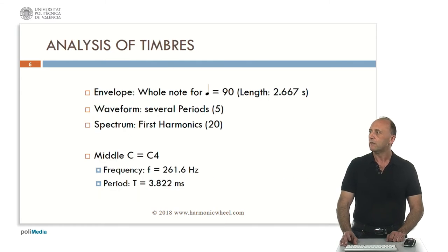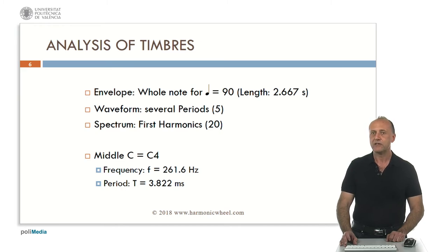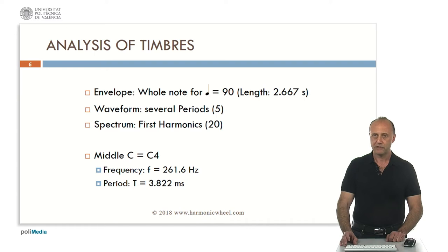To analyze the timbre, we will consider a whole note for a tempo of quarter note equal to 90. The whole note will have a length of 2.667 seconds. We will represent 5 periods of the waveform and the first harmonics — typically 20 and sometimes more. As a reference, the middle C on a piano is C4, which has a frequency of 261 hertz and a period of 3.8 milliseconds.